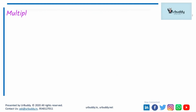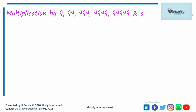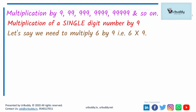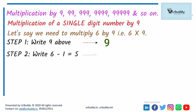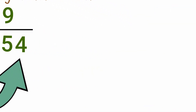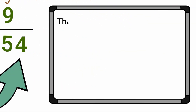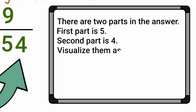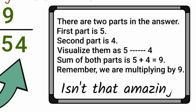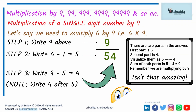Let's first talk about a special case — multiplication by 9, 99, 999, and so on. We start with multiplication of a single digit number with 9. Let's say we need to multiply 6 by 9. Step 1: write 9. Step 2: subtract 1 from 6 — 6 minus 1 equals 5; write 5 under 9. Step 3: subtract 5 from 9 — 9 minus 5 equals 4; write 4 after 5. The answer is 54. Notice there are two separate parts: first part is 5, second part is 4 — interestingly, their sum equals 9.